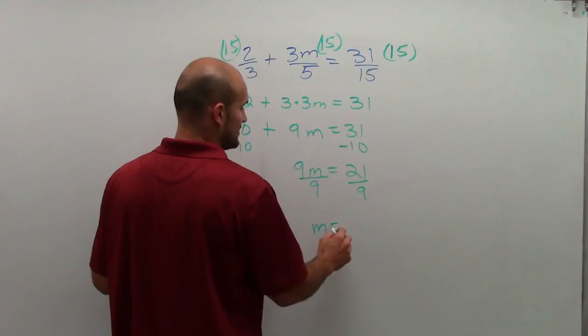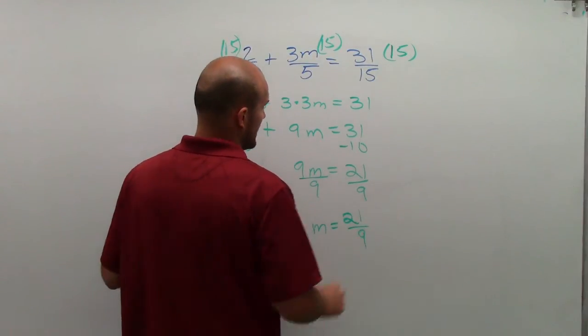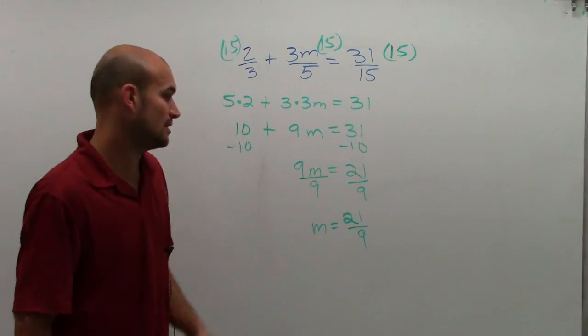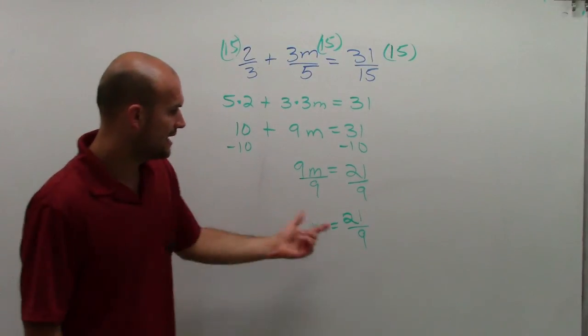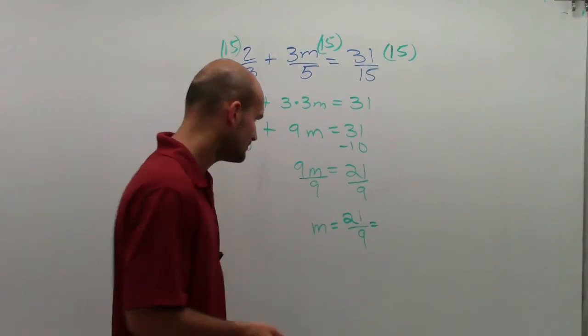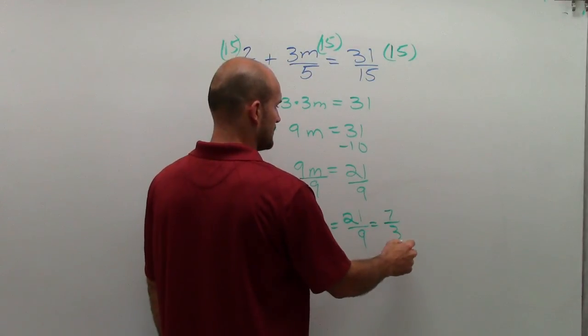And I get m equals 21 over 9. And then we take a look and say, can we reduce this fraction at all? And yes, we can. Actually, 3 divides into the numerator and the denominator. So we divide by 3, you get 7/3.